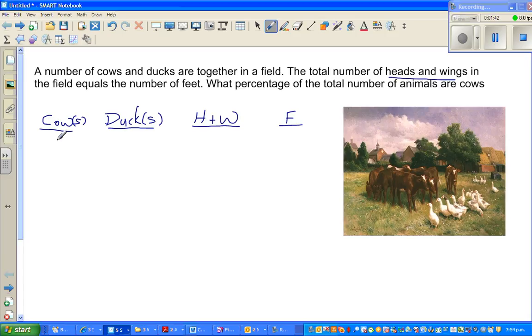So let us start with one cow. If you've got one cow and say one duck. So one cow is how many heads? So there are how many heads for one cow and one duck. Well you've got two heads and how many wings? Two wings. So that will give you four. Head plus wings will give you four. And how many feet? Four plus two, six feet. This is not the answer.